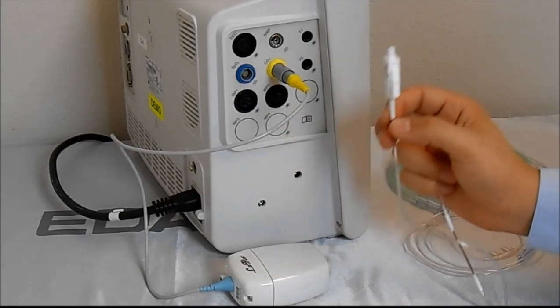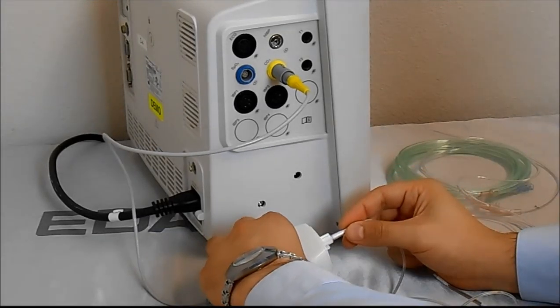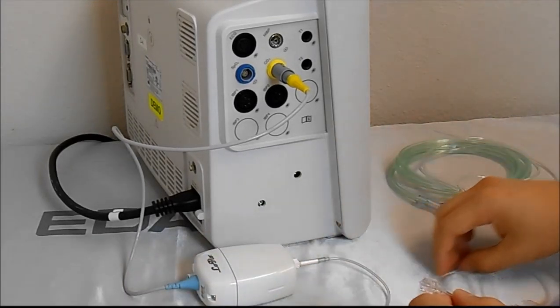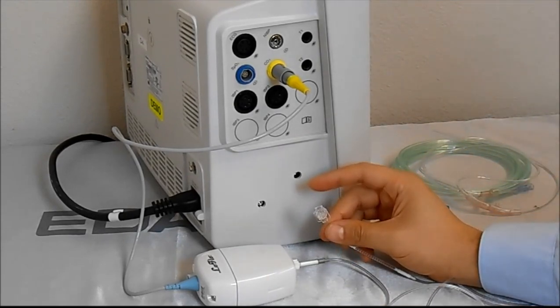So all we do is we take the sample line from Respironics, plug it in, and then from there on the opposite side, there's a male luer lock ending.